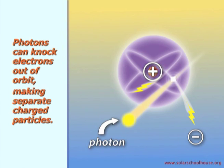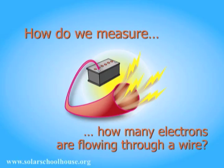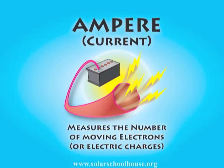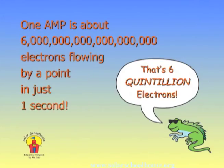Now we have two free charged particles: the negatively charged electron and the positively charged nucleus. Because positive and negative electric charges are attracted to each other, they'll try to recombine to make an atom. But if they're in a solar cell, the design of the cell forces the electrons to flow through wires connecting the front and back of the cell. This flow of electrons through a wire is what we call electricity. So how do we measure this current of electrons moving through a wire? Amperes — also called amps — measure the number of moving electrons. The number of electrons measured by one amp is about six quintillion. Six quintillion electrons moving past a point in a wire in one second is equal to one ampere.